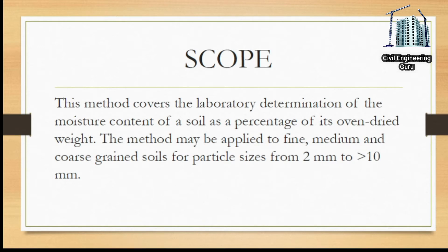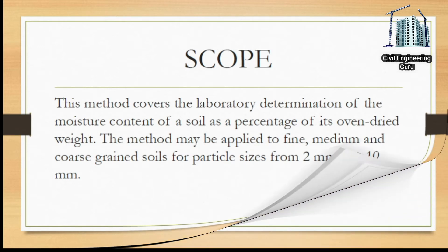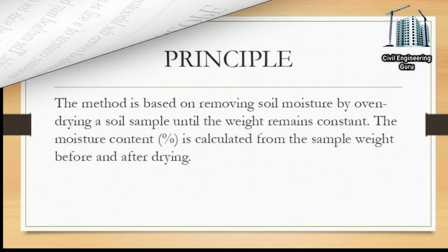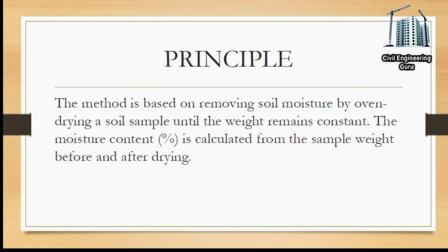The method is based on removing soil moisture by oven drying a soil sample until the weight remains constant. The moisture content percentage is calculated from the sample weight before and after drying.